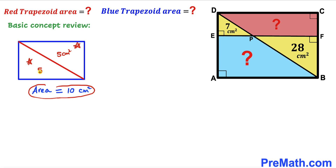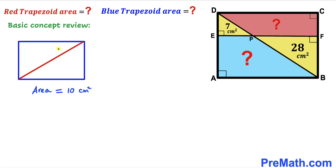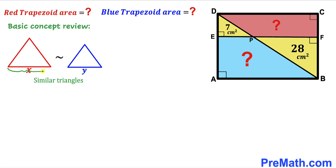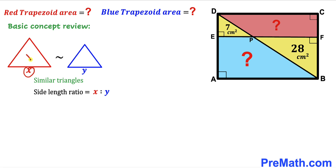Likewise, if we draw the diagonal the other way around, it divides the rectangle into two equal parts of 5 cm² each. Now let's focus on two similar triangles — the red triangle and the blue triangle. If the side length of the red triangle is x and the side length of the blue triangle is y, then their side length ratio is x to y, and their area ratio is going to be x² to y².